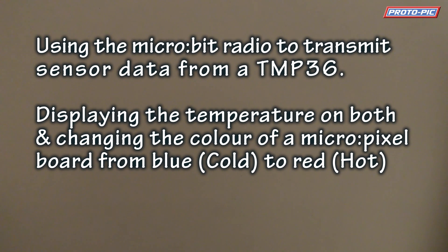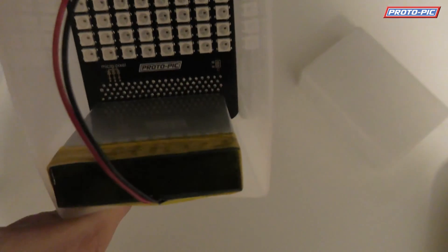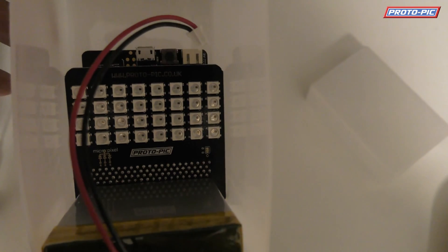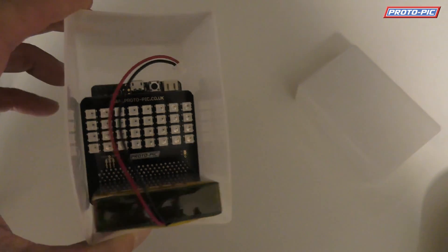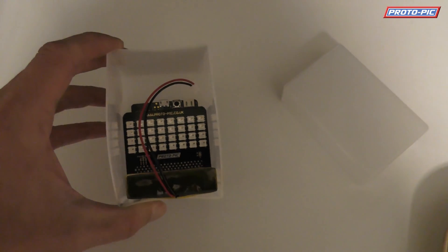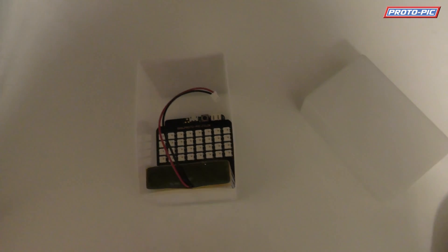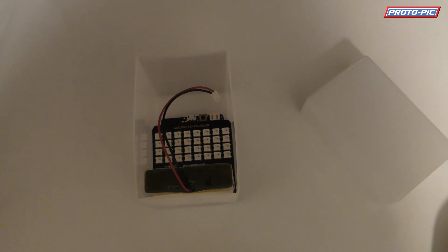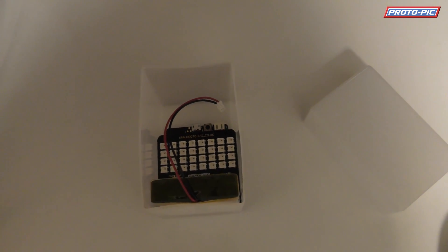So you can see here in this box we've got a big LiPo battery, you've got a BBC microbit there with one of our micropixels and I put it in this box to access the diffuser to make it a bit simpler to see the temperature. I'm just going to put it all back together and we'll show you it running.